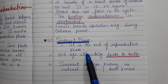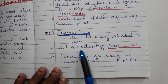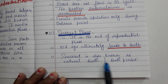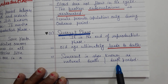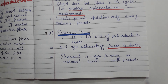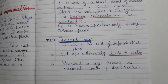The next and last phase is the senescent phase. It is the end of the reproductive phase. Senescent means natural death — old age ultimately leads to death. So these are the phases of sexual reproduction. We will discuss the next topic in the next video. Thank you very much, have a nice day.